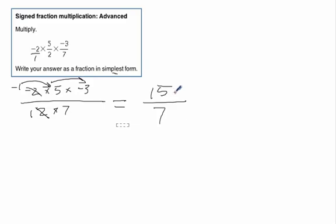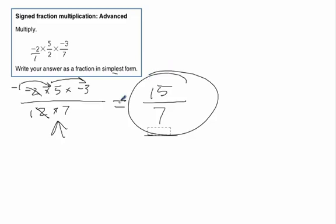And that's the simplest form. We always check and see, are there any numbers that will go? If we do our cross canceling well, then we don't ever have to worry about any simplification over here. So there's our answer, 15 over 7.